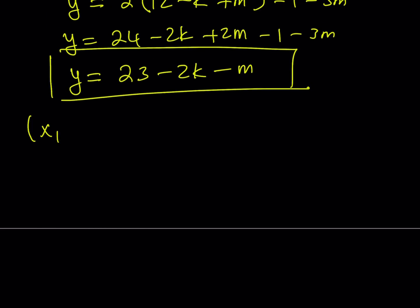We got the x and we got the y and we already had the z in terms of everything. Let's put it all together. x, y, z as an ordered triple can be written as 3k minus m minus 11, 23 minus 2k minus m, 12 minus k plus m. That basically gives us all the solutions.